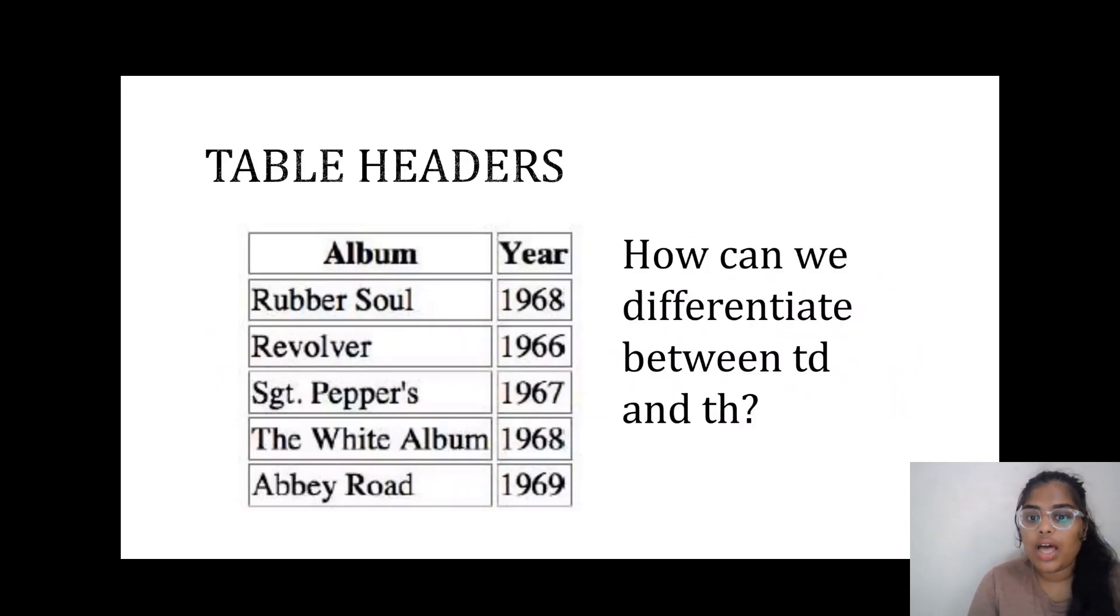How can we differentiate between TD and TH? TD is for rows where we give the data in the cells, and TH is like a heading for that particular row. TD is given in normal letters where TH will be in bold letters to differentiate between the heading and the data.